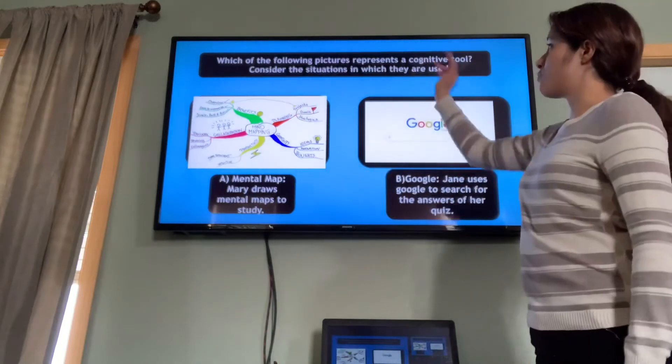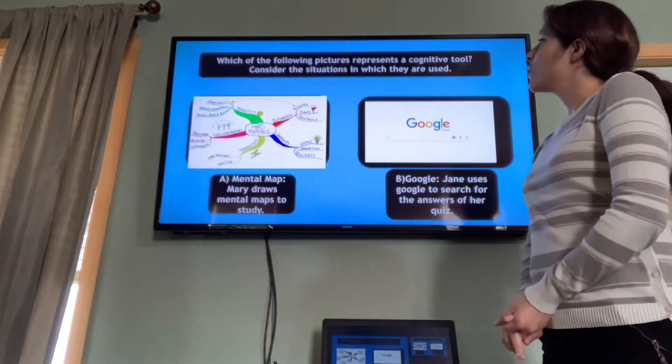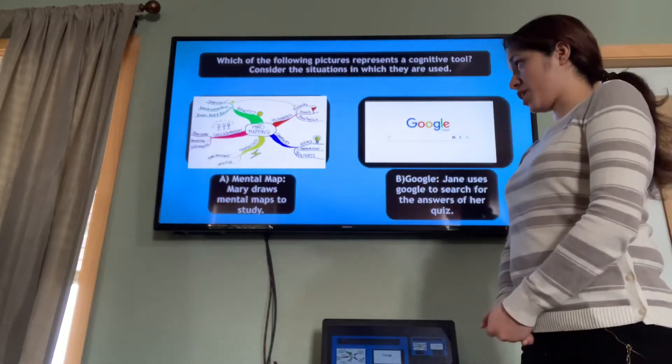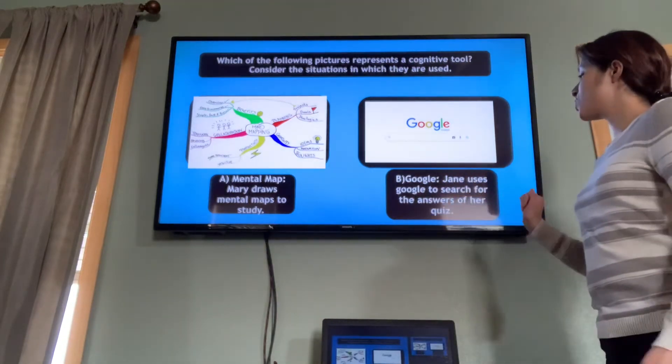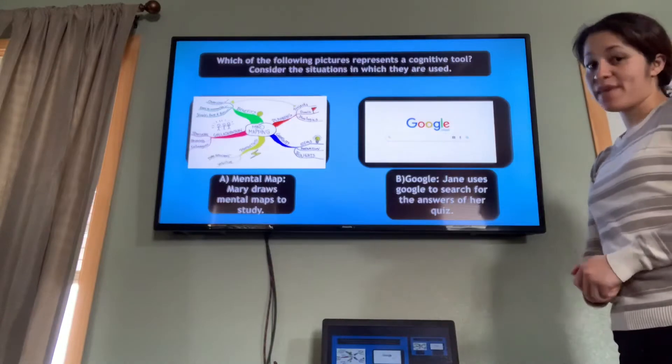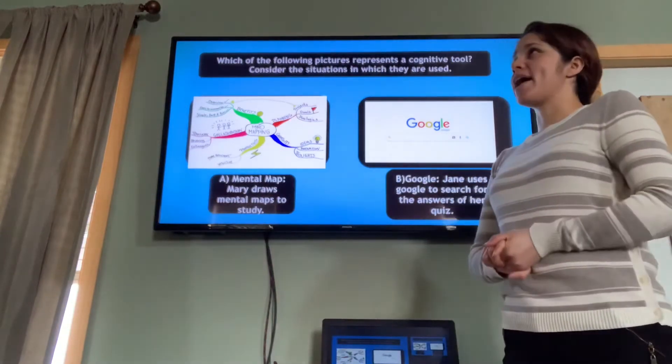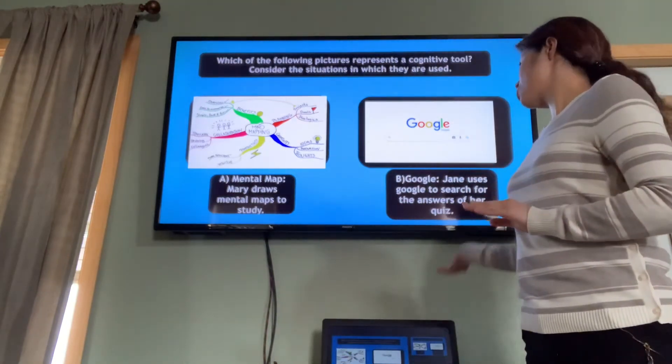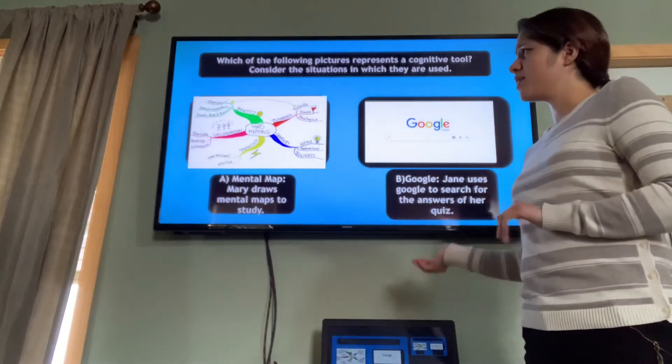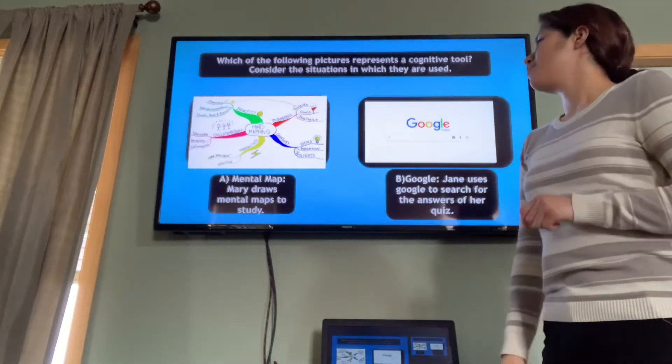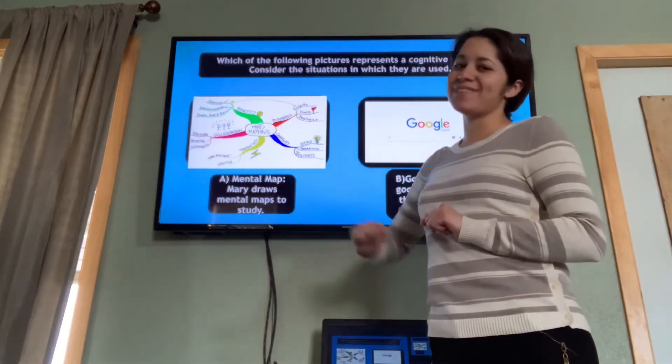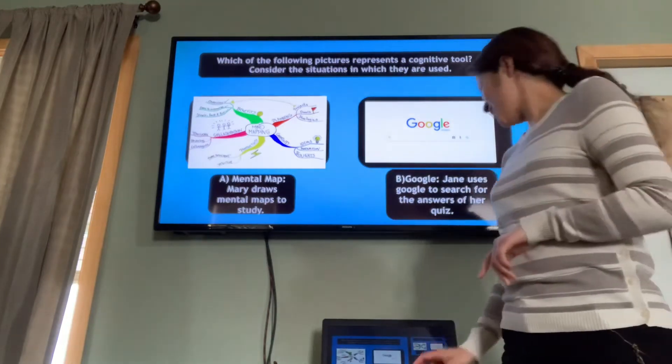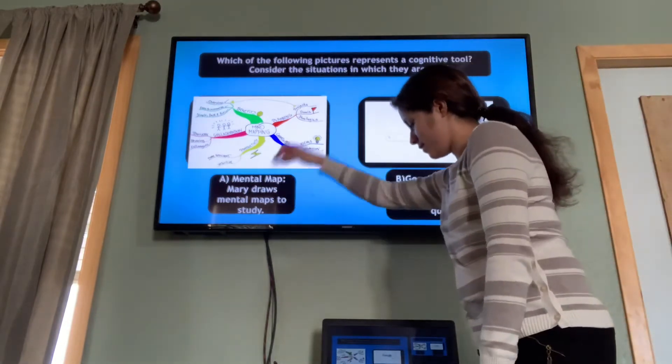Which of the following pictures represents a cognitive tool? Consider the situations in which they are used. A: Mental map - Mary draws mental maps to study. B: Google - Jane uses Google to search for the answers of her quiz. Remember that cognitive tools engage and enhance thinking. So if you are just searching for the answers of your quiz in Google, you are not thinking. But if you are drawing mental maps to study, then you are organizing your ideas and your knowledge. So the right option is letter A.